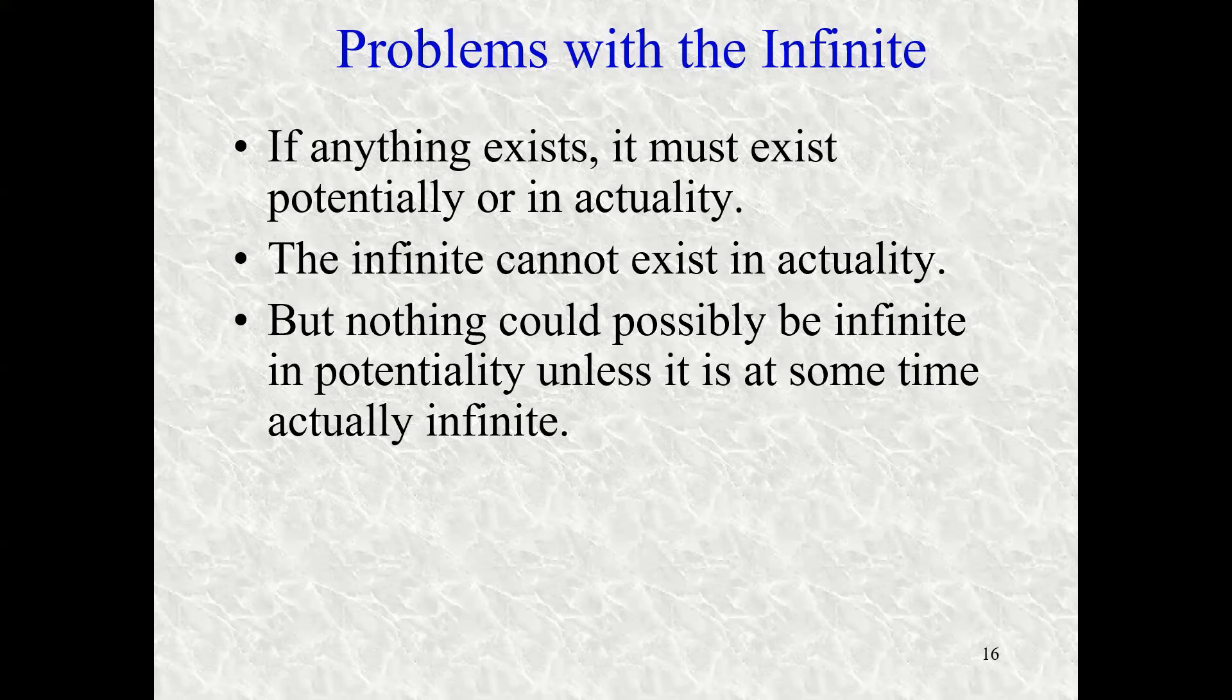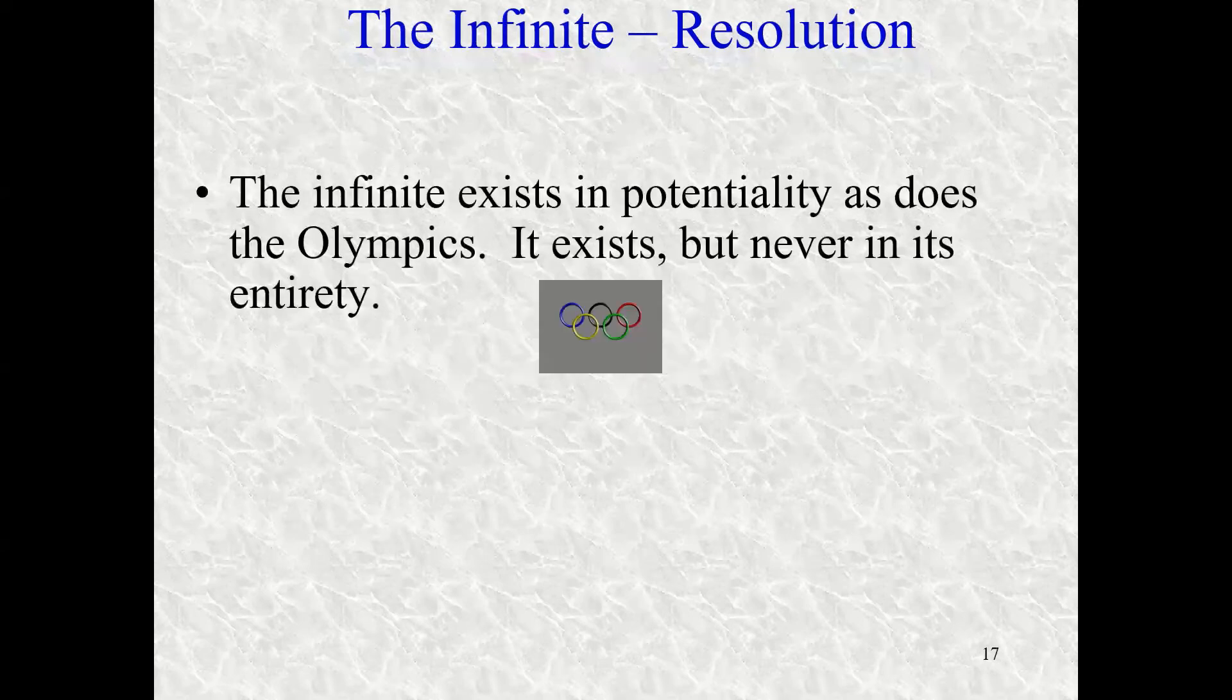We can't say that something has a potentiality unless at some point that potentiality becomes actualized. So we can't say the infinite merely exists in potentiality unless it is at some time actualized there being an actual infinite. But that can't happen like we just said. So with these problems, how do we resolve it? What does Aristotle say? So Aristotle says, here's how we need to think about the infinite.